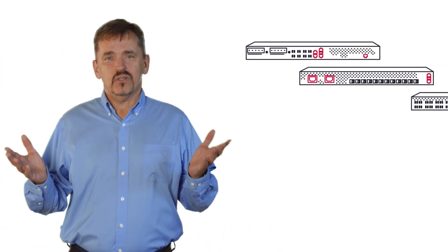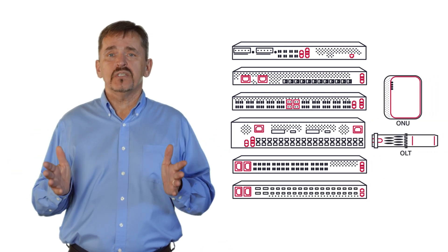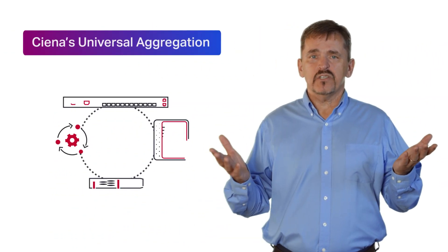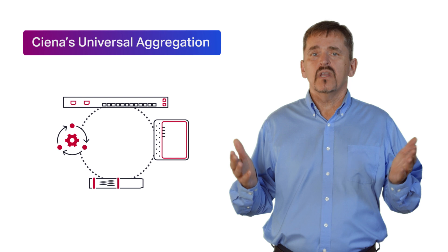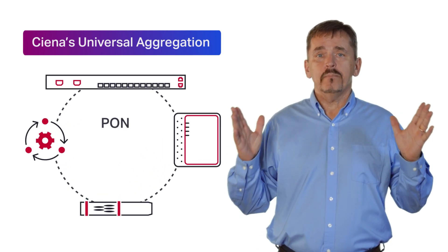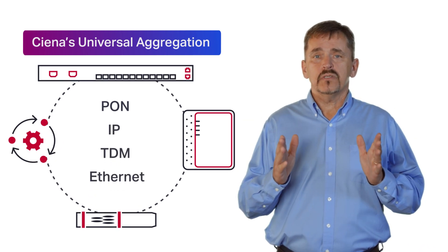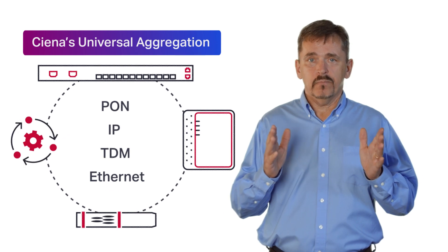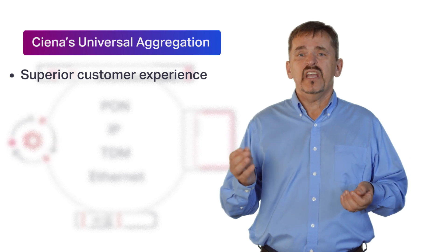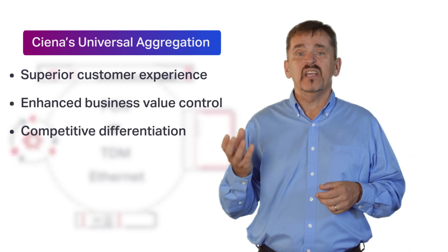Sienna's universal aggregation solution allows flexible open deployments supported by our feature-rich extensive routing and switching portfolio. Instead of building siloed standalone architectures to support different types of services, network operators can now bring more value to their networks by unifying PON, IP, TDM, and Ethernet services on the same Sienna aggregation platform. This provides a better customer experience, choice, and business value control, and lets you stand out in a highly competitive marketplace.